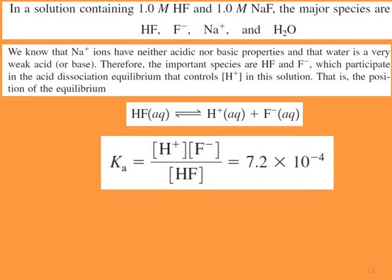We have HF, fluoride, sodium ion, and water. Na⁺ ions have neither acidic nor basic properties because sodium ion is the conjugate acid of a strong base and has no affinity to interact with hydroxide. Water is a very weak acid or base since it is amphoteric. Therefore, the important species are HF and fluoride, which participate in the weak acid dissolution equilibrium that controls the proton concentration.